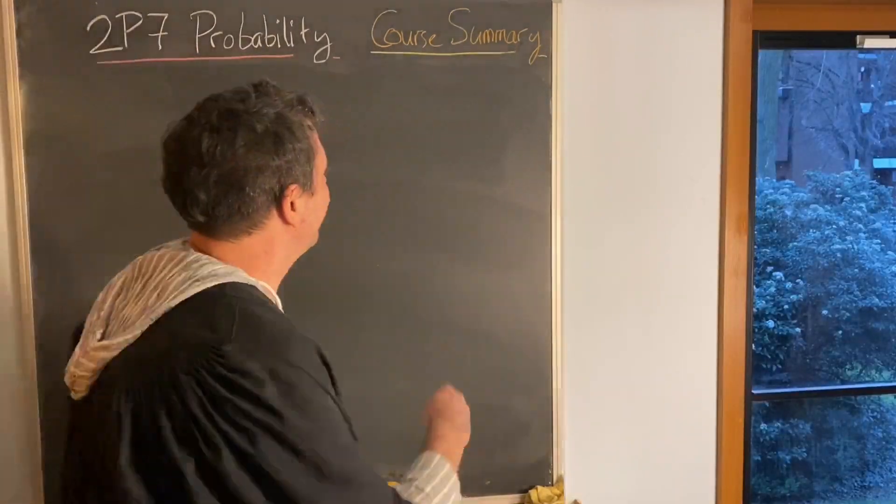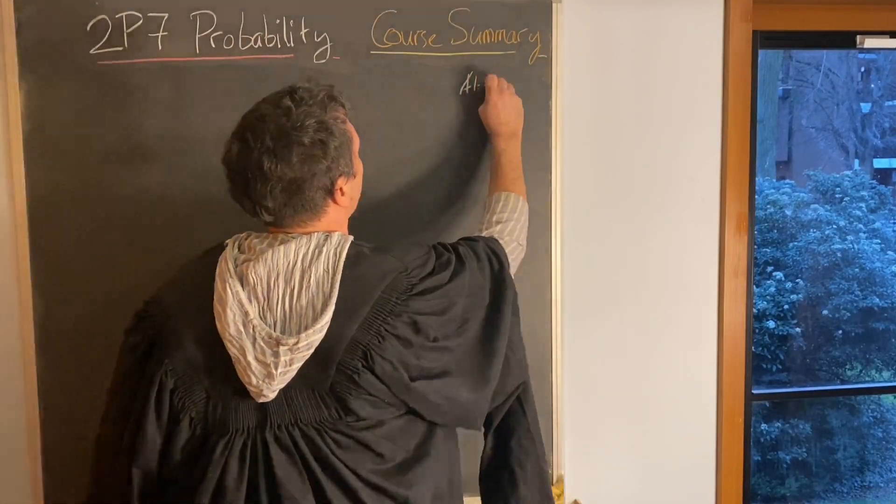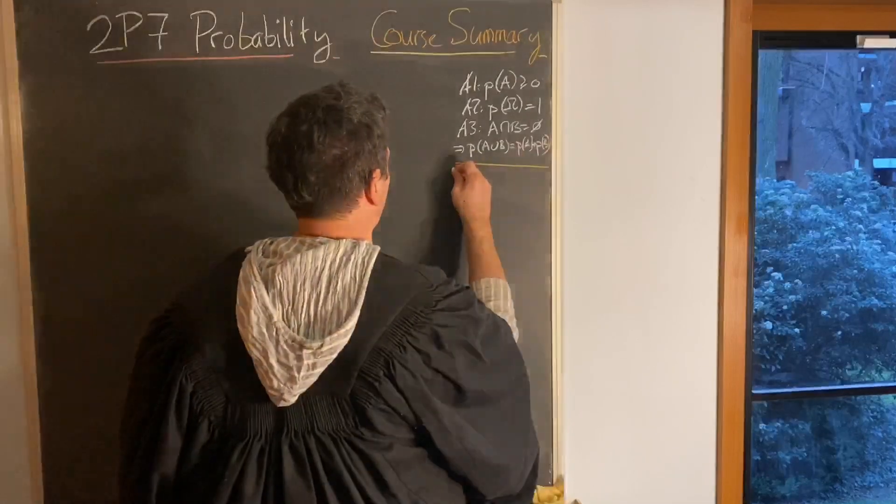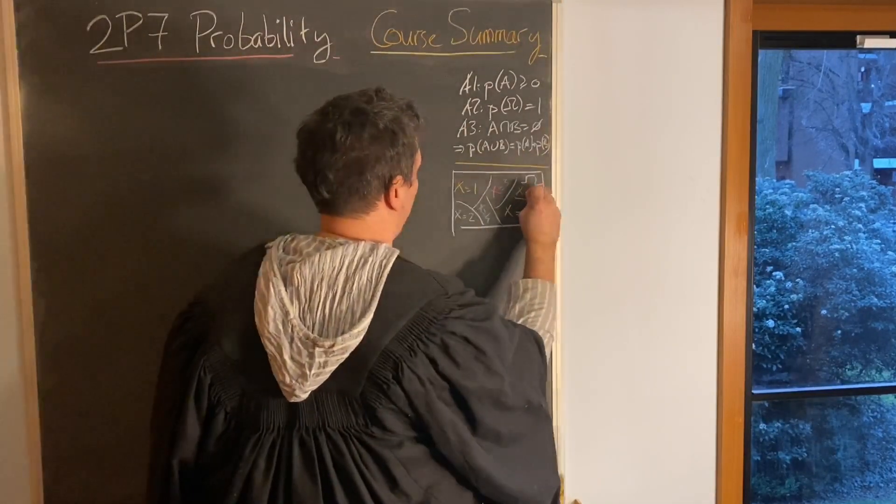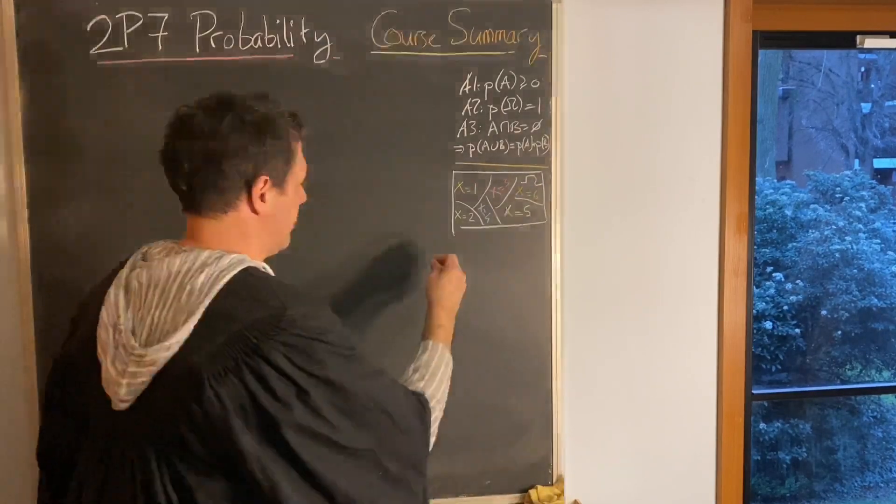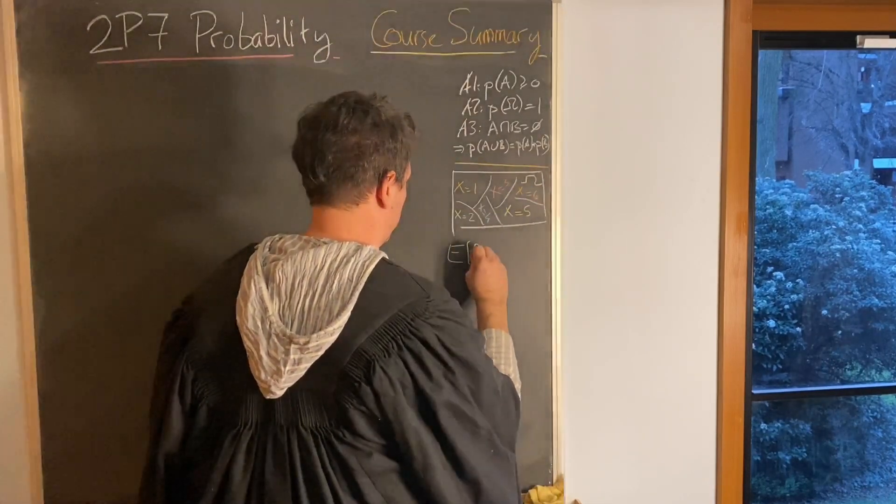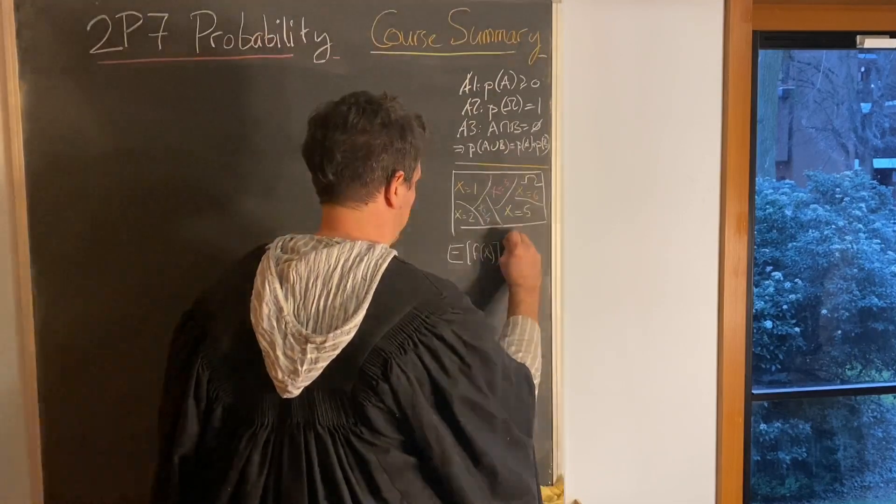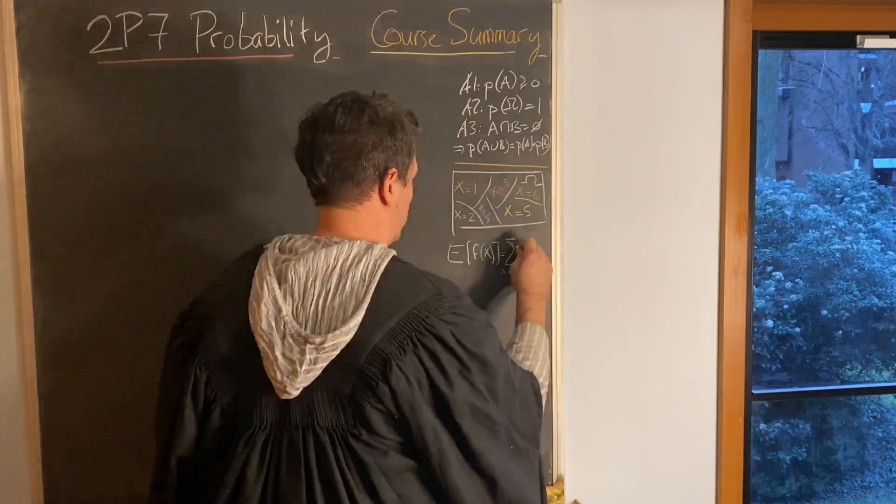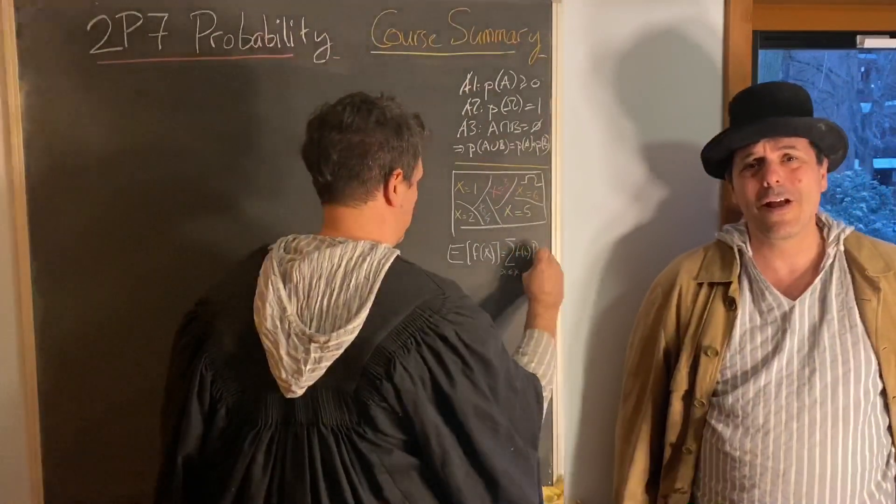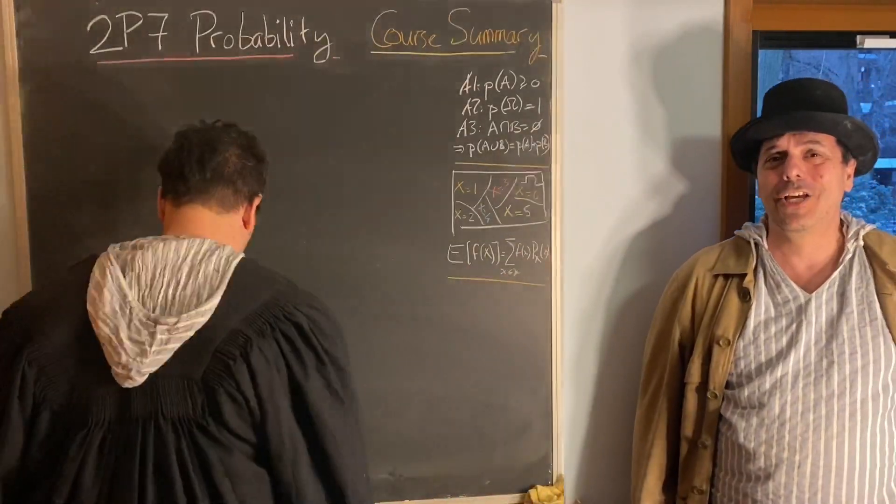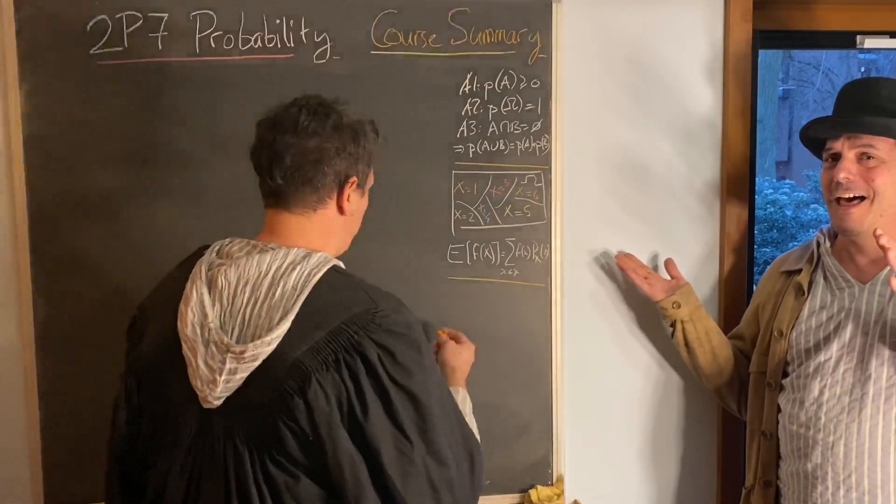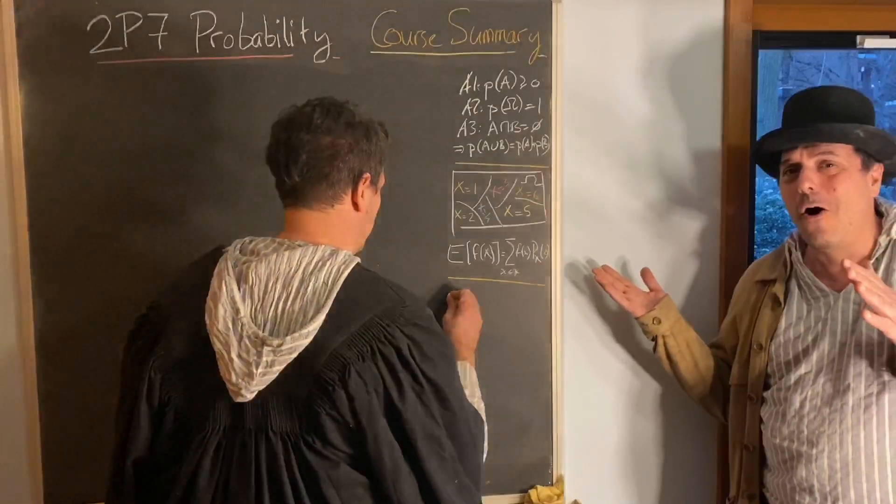We did them axioms one, two, three, and random variables in tow, and expectations of it all. Get more ability in probability, you've seen it all on my blackboard.